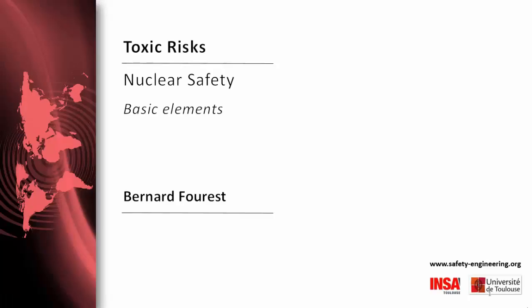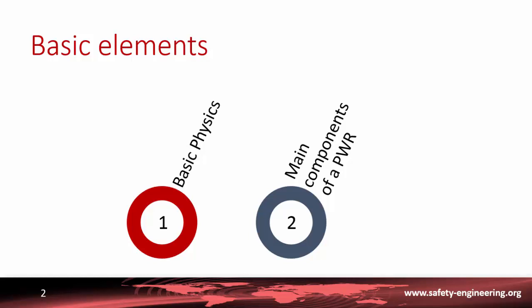This is the first part of this unit on nuclear safety. We will first see some definitions and elements of basic nuclear physics, and in the second and third parts, you will see some description of the main components of PWRs. It is first important to give some definitions of the main concepts used here and to make a distinction between nuclear safety, radiation protection, nuclear security, and industrial safety.